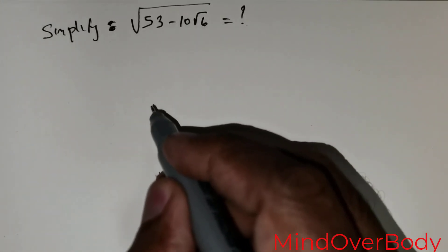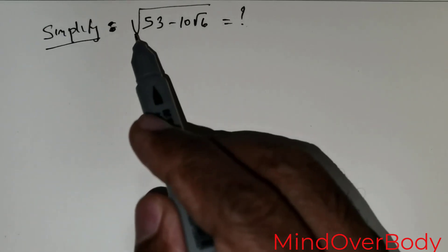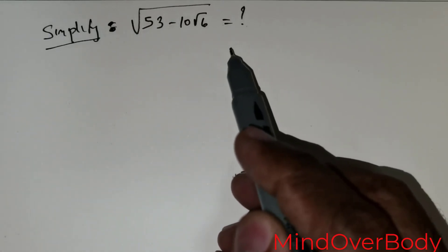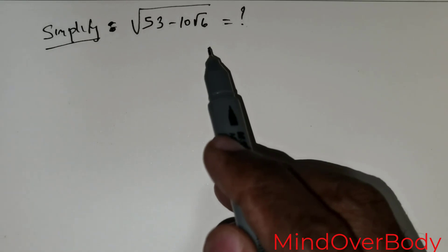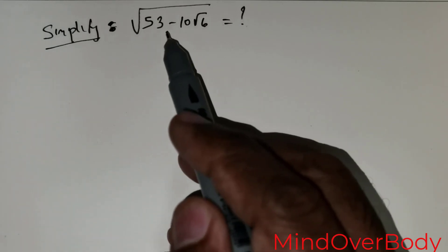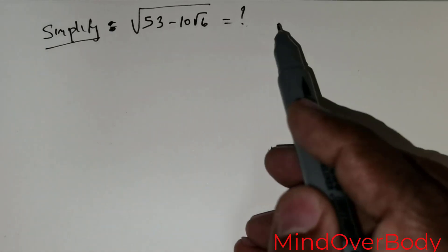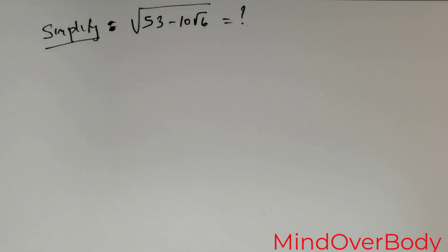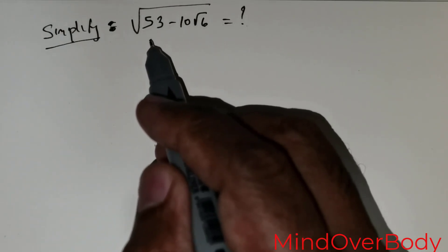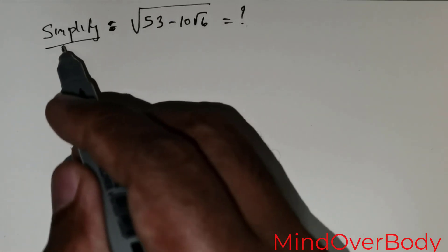Before we start this question, there are a few things I wish to clarify. Whenever you see the term 'simplify,' the meaning is that you have to make sure the problem is reduced from its original form to a form which is manageable. That is the very meaning of simplification. In this case, we have a radical sign containing two quantities, one of which also has a radical sign, making it not easy to evaluate directly.